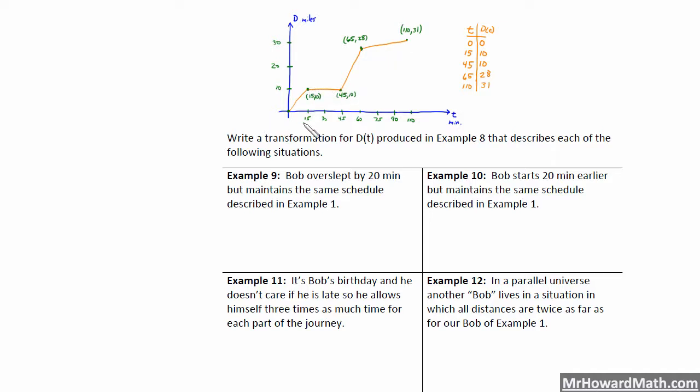I think it's easier to think about the transformation in terms of the graph. So example 9 says Bob overslept by 20 minutes but maintains the same schedule described in example 1. So he overslept 20 minutes. That means everything is happening 20 minutes later. So we need to shift this piecewise function to the right by 20 minutes. So the right to the right 20 minutes. So the way we do that, that's going to be D of T minus 20. Remember when we go in the x direction, in this case we're using T, where you need to go opposite of the sign and it's inside with that x coordinate. So it would be T minus 20 in this case to shift to the right. Okay, the next one, example 10.